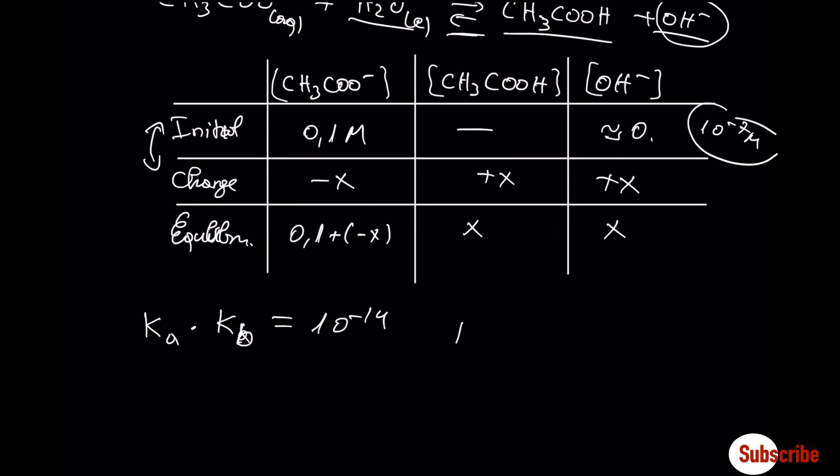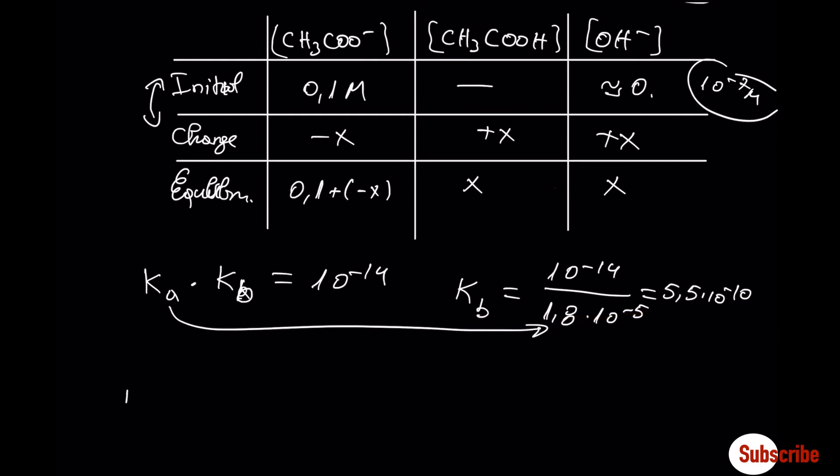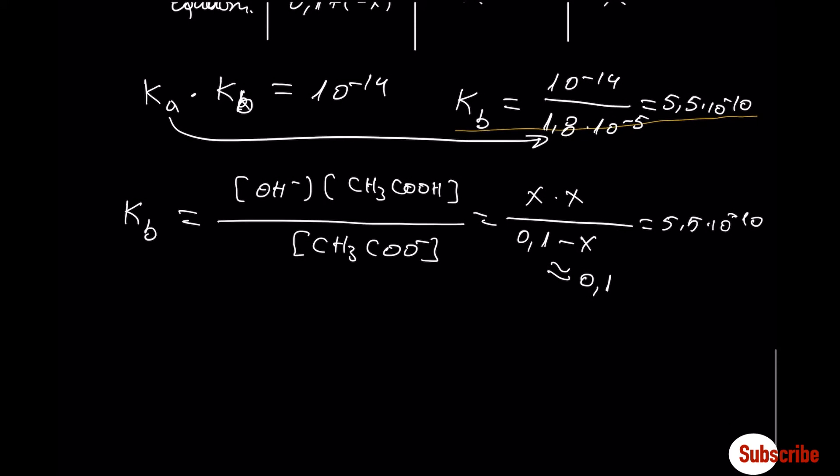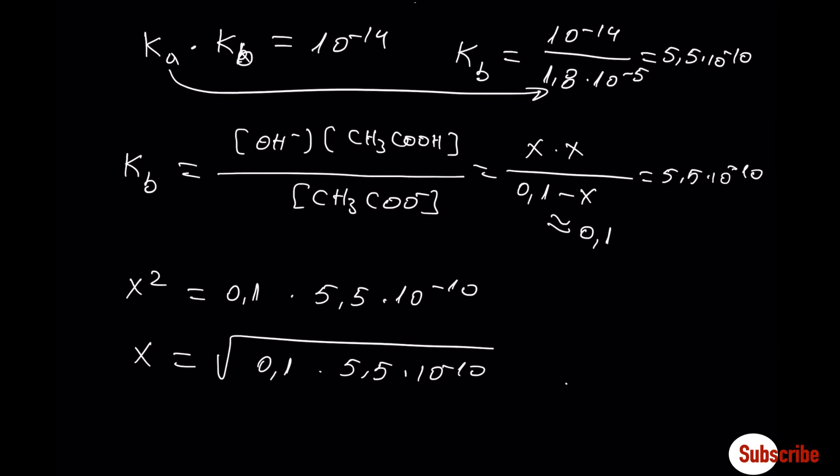So from here we can find the Kb for the conjugated base, which is 10 to minus 14 divided by the Ka, which is the constant of acetic acid. Now we can write the Kb for the conjugated base. Here we have to make a simplification by respecting the rule of 5%.